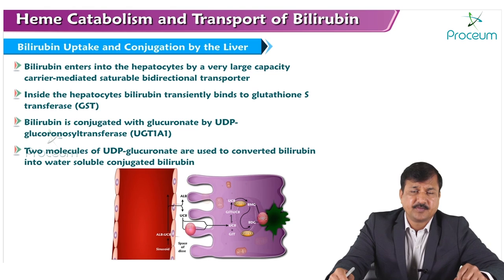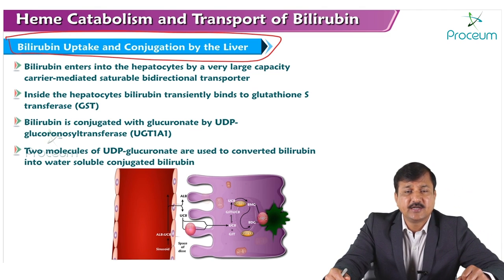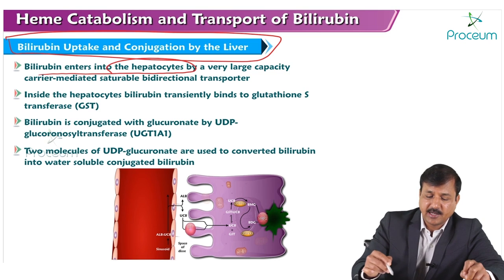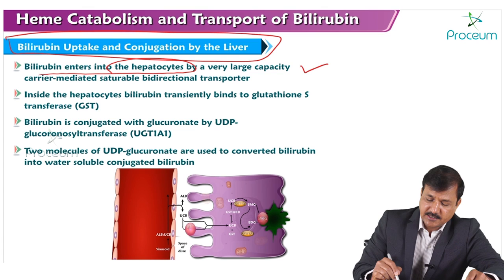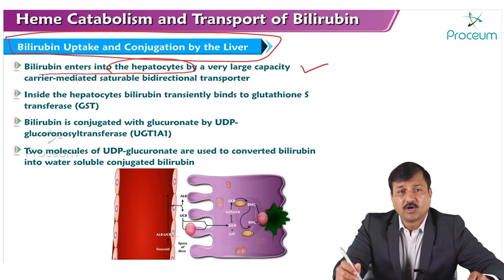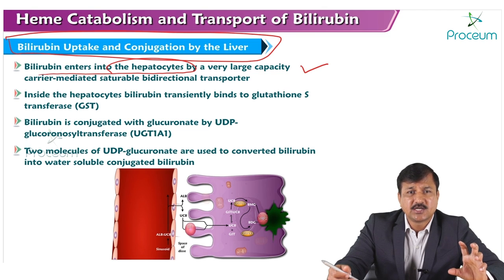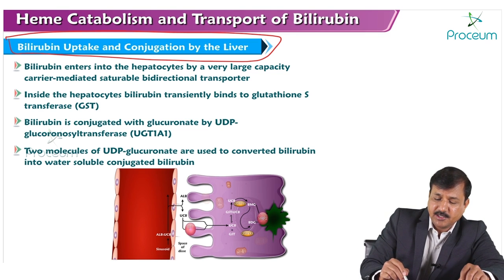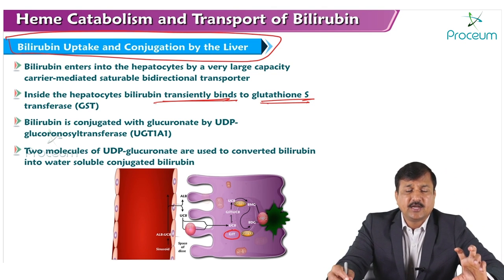What happens to bilirubin brought to the liver by albumin? Bilirubin is taken up by hepatocytes via a very large capacity, carrier-mediated, saturable bilirubin transporter — a bidirectional transporter. Albumin is separated and bilirubin enters into the hepatocyte. Once inside, bilirubin transiently binds with glutathione S-transferase (GST) momentarily before the conjugation reaction proceeds.